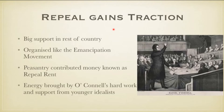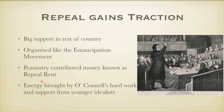Big support was found in the rest of the country. O'Connell organised the repeal movement similarly to the Emancipation Movement of the 1820s, with similar contributions. Just as the Emancipation Movement had Catholic rents collected after church, the repeal movement had the peasantry contribute money known as the repeal rent. Energy was brought by O'Connell's hard work and support from younger idealists, helping spur on the movement and gain traction.